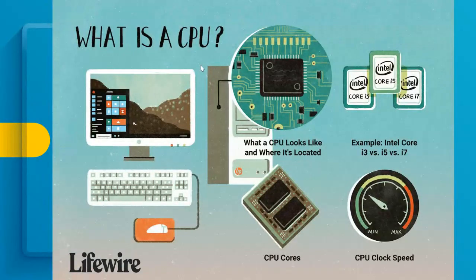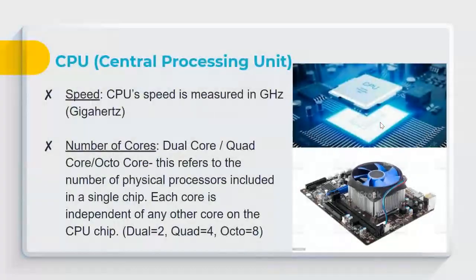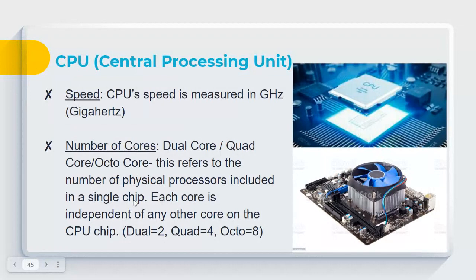The CPU is located on the motherboard beneath the heatsink. Key CPU factors include clock speed (measured in gigahertz, GHz), number of cores (dual-core, quad-core, octa-core — each core is an independent processor on the same chip), and cache size. Examples include Intel Core i3, i5, i7, and AMD Ryzen processors. A fan and heatsink sit on top of the CPU to keep it cool.